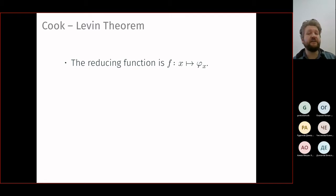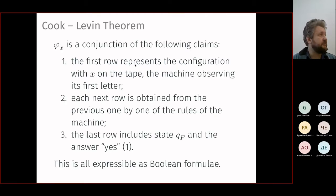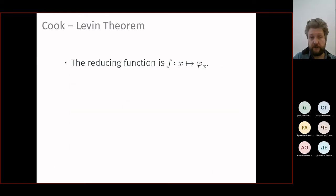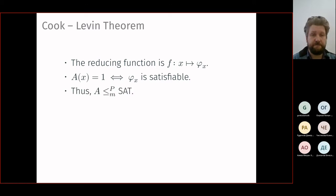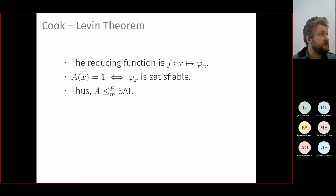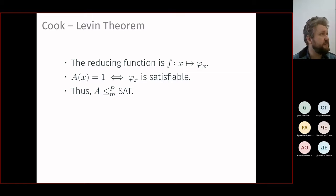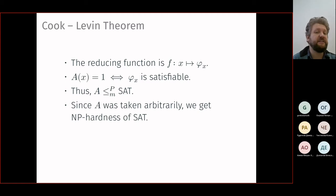The reduction function takes x and generates this big boolean formula. Only the first condition depends on x; everything else comes from the definition of the Turing machine solving problem A. The formula is satisfiable if and only if the answer to A on x was yes. Thus problem A is reducible to SAT. Since A was an arbitrary NP problem — the only assumption being that there is a non-deterministic Turing machine solving it in polynomial time — this proves SAT is NP-hard.